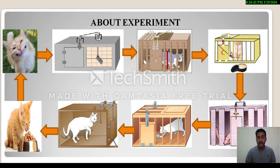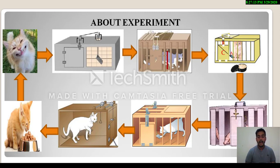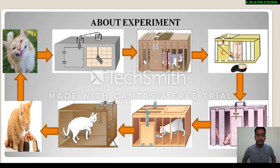Thorndike found that as he exercised this experiment with the cat, the cat took less time to open the door. The more the cat exercised, the more successful it became at establishing the relation between the lever and the door. After 100 trials, Thorndike found that the cat opened the door by pressing the lever without any delay. In this whole experiment, the food outside the cage was acting as the stimulus, and any organism acts when the response is followed by a motive.